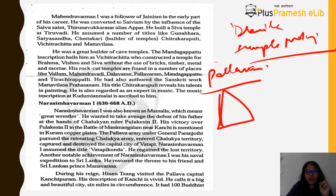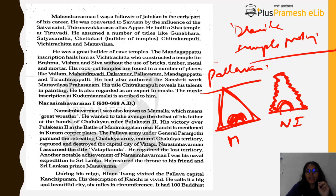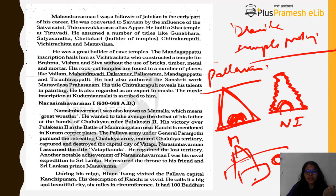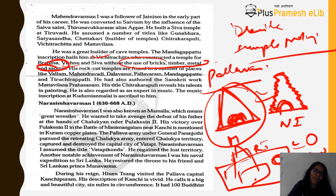After Mahindra Varman came Narasimha Varman, who gave shape to the rock structures. Then came Rajasimha Varman, who started constructing big proper temples with pyramids and large walls. So Mahindra Varman only built cave temples. The inscription at Mandagapattu calls him Vichitachitta — he constructed a temple of Brahma, Vishnu, and Shiva without the use of bricks, timber, metal, or mortar. That is why people called him Vichitachitta — because it seemed almost impossible.